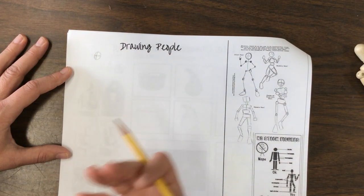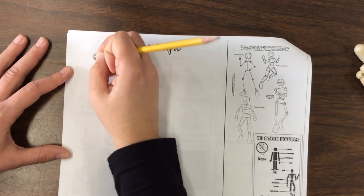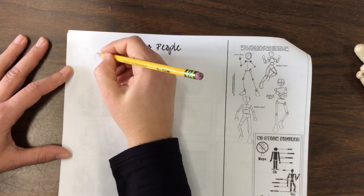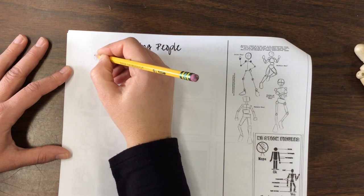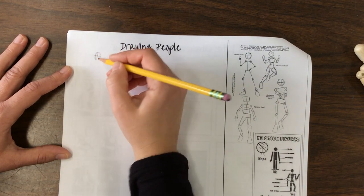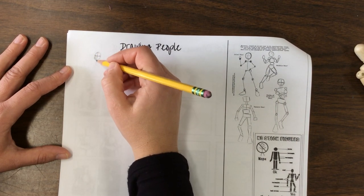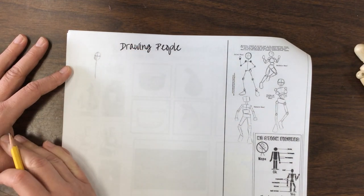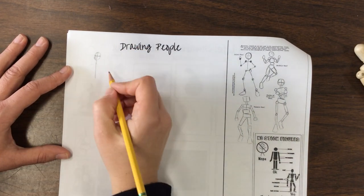Wherever it crosses is wherever your person is looking. So if I want them to look forward, I'm going to have it forward. Now, first thing we're going to do is we're going to have a line that goes straight down. Imagine the spine all the way down.